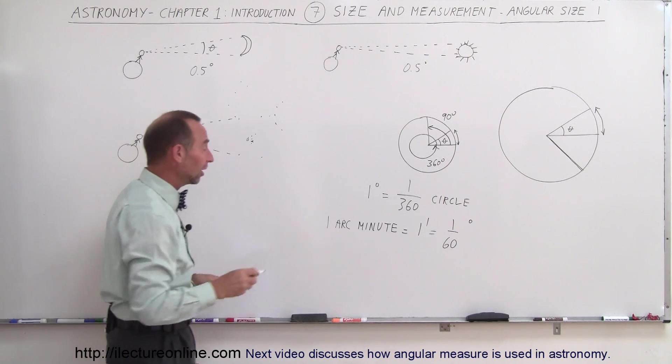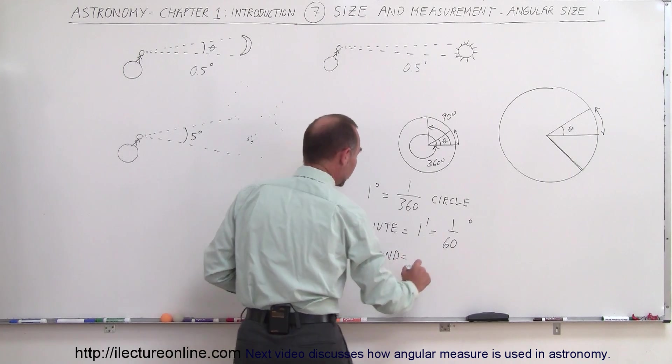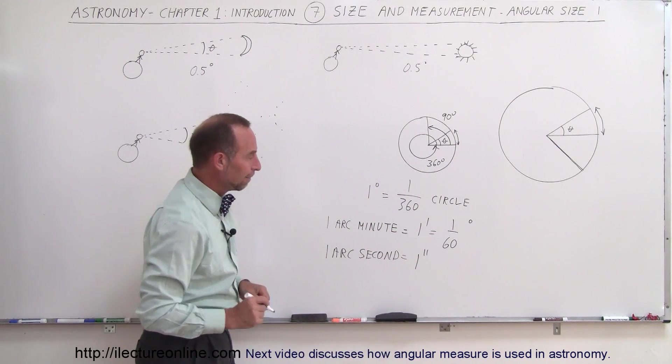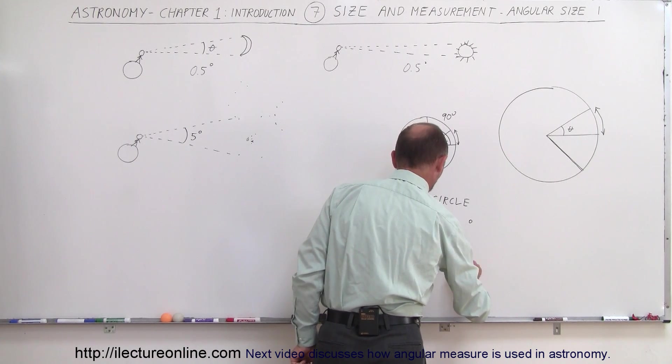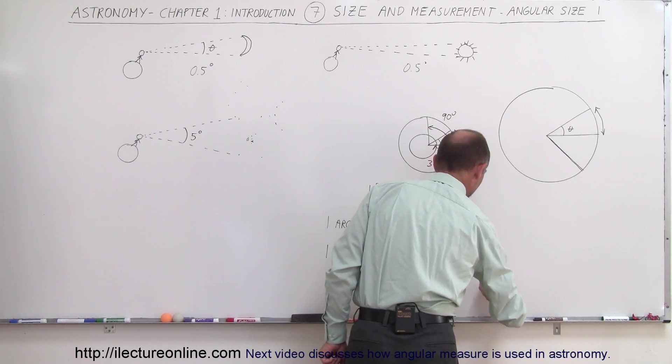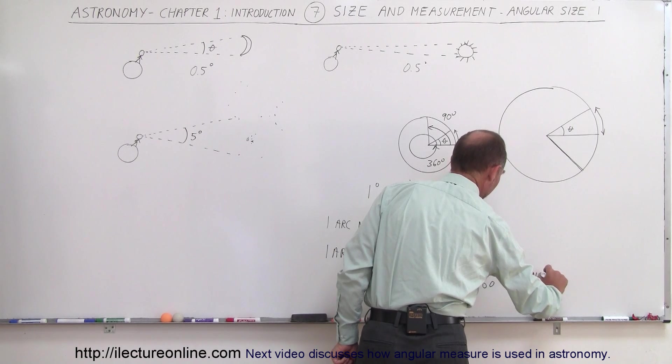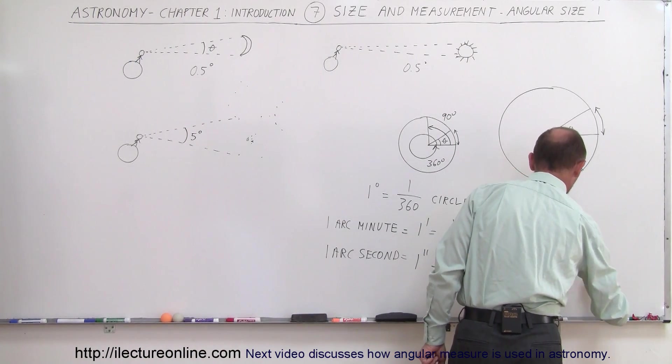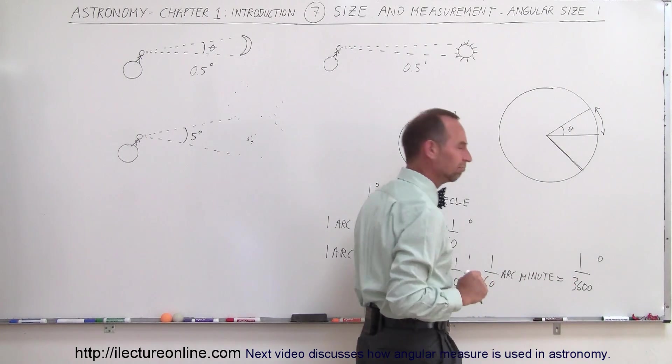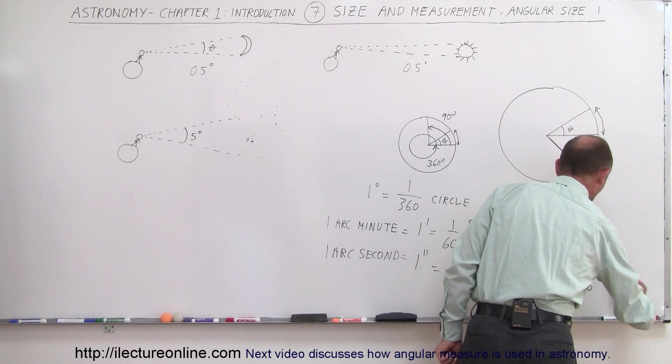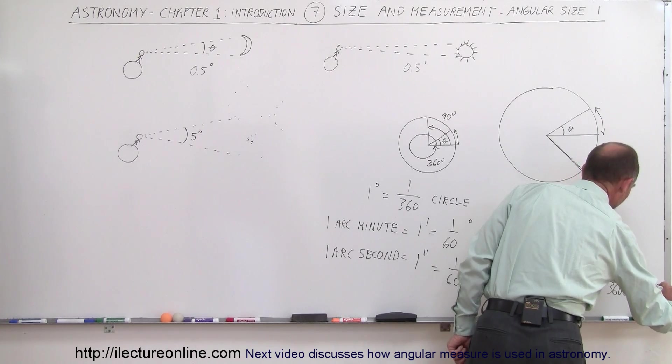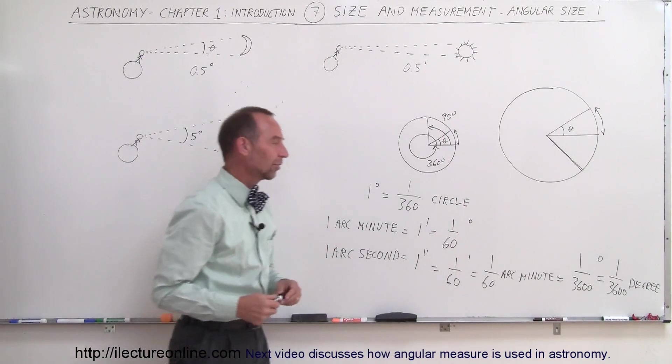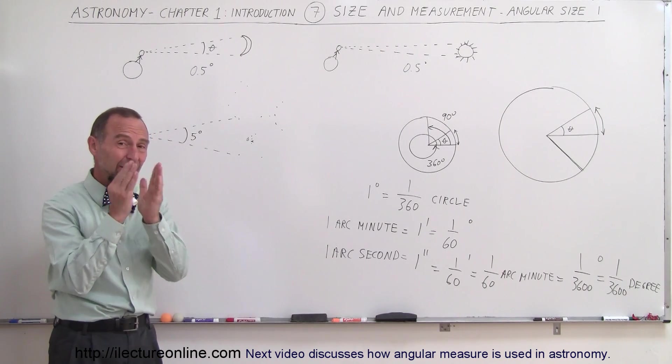And then we have even smaller angle size that we use in astronomy, we call it one arc second. The notation would be one with two double dashes like that. This equals 1/60th of an arc minute. Since there's 60 arc minutes in a degree, this equals 1 over 3600 of 1 degree. This little circle up there simply is the degree symbol. So we can write out 1 degree or 1 over 3600 of a degree like that.